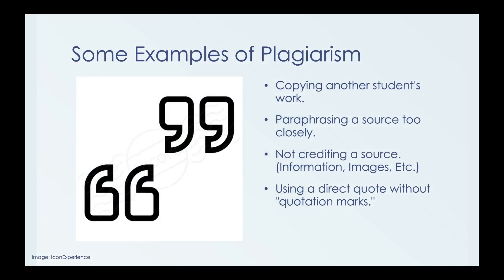Some examples of plagiarism. One example is copying another student's work. This happens a lot in elementary school, middle school, and high school when students forget to do their homework. Instead of directly copying another student's work, if there is time in the morning, maybe they can help you through it, or you can work on it together if you've both forgotten. But copying another student's work directly is plagiarism, which can result in expulsion or suspension.